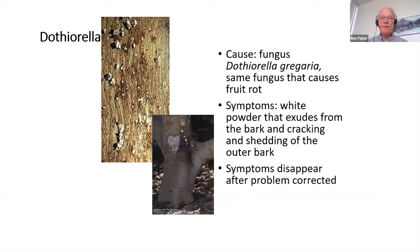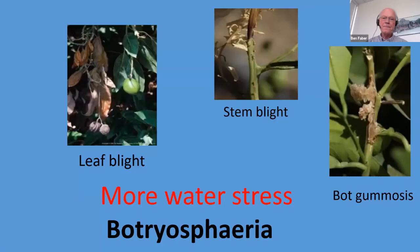Dothiorella — it's a fungus, a Botryosphaeria — it's the same thing that causes fruit rot. Dothiorella gregaria. Where do the spores come from? They come from the dead tissue on the ground, just waiting and lurking for a water-stressed tree. And often it's not a primary pathogen — it's a secondary pathogen. Once you relieve the stress, a lot of times the symptoms go away.